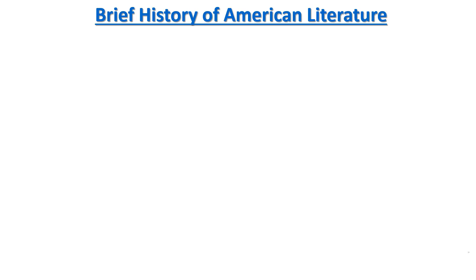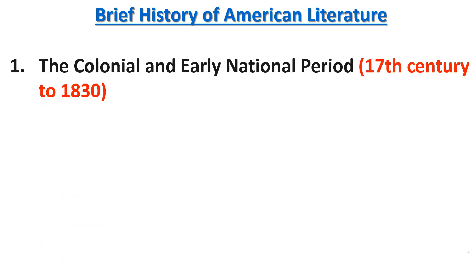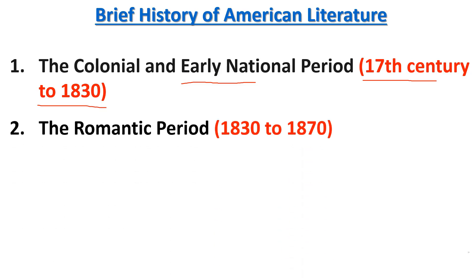The first period of American literature is the Colonial and Early National Period. This is the first period regarded in the history of American literature, spanning from the 17th century to around 1830. The important literary figures of this period include Benjamin Franklin and Washington Irving — these two are the important writers and authors related to the Colonial and Early National Period.